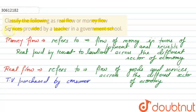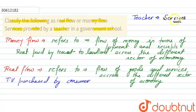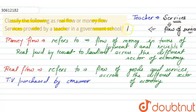Now you can see what is being asked here: services provided by a teacher. The teacher is providing a service here. As we have seen, when services are provided, it is a flow of services. So this process is a flow of services, which means it is real flow. This will be classified as real flow.